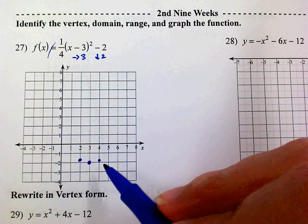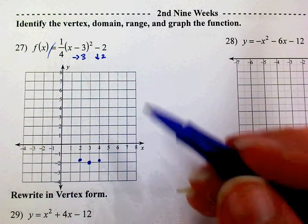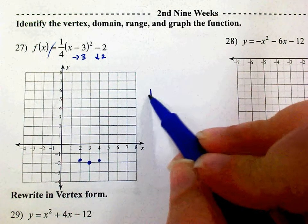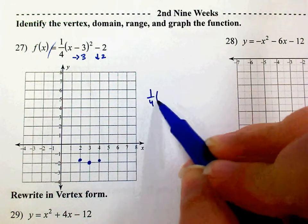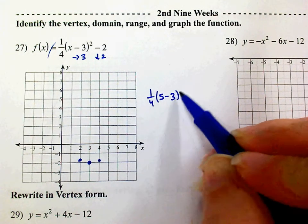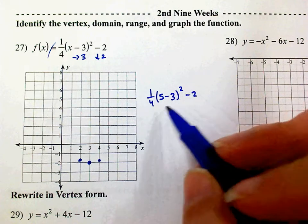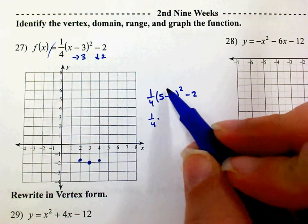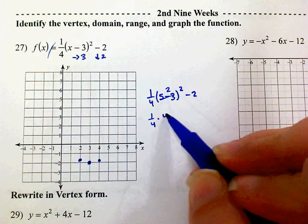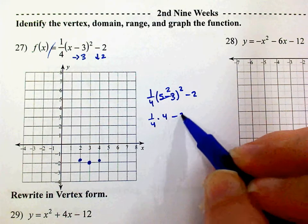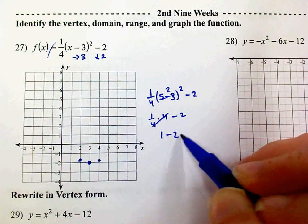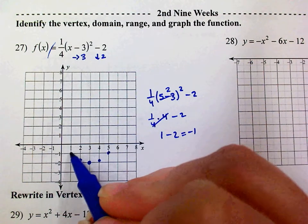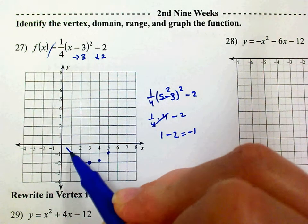I only need 5 points, so the next thing I'll do is go to the right one more, which is x = 5. So 1/4 times (5 minus 3) squared minus 2. 1/4 times 2 squared is 4, and 1/4 of 4 is 1. So 1 minus 2 is negative 1. Make it symmetrical and that's enough.